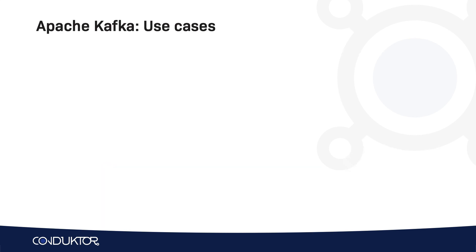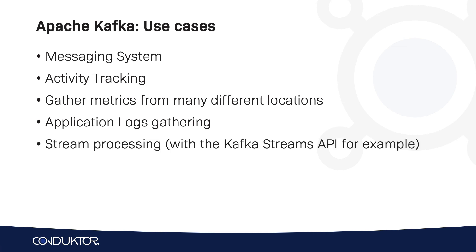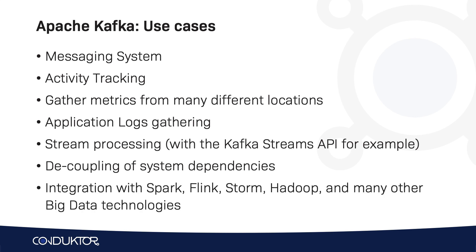So what are some use cases for Apache Kafka? It could be used as a messaging system for activity traffic. It could be used to gather metrics from many different locations, or to gather application logs at scale — in fact, metrics and logs were among the first use cases of Kafka at LinkedIn. It can be used for stream processing, as we'll see with the Kafka Streams API. It can be used to decouple system dependencies in microservice architectures, and it has a lot of integration with big data technologies such as Spark, Flink, Storm, and Hadoop.